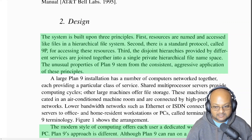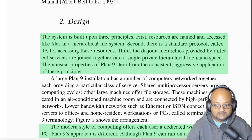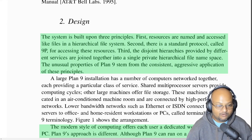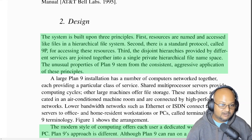Let's look at the three main design principles of Plan 9. The first one is that all resources are named and accessed like files in a hierarchical file system. The second principle is to have one standard protocol, which they call 9P, for accessing these resources — and it is the same protocol used whether resources are local or remote. The third design principle, used to compose a computing environment, is that various disjoint hierarchies provided by different services are joined together into a single private hierarchical file namespace.